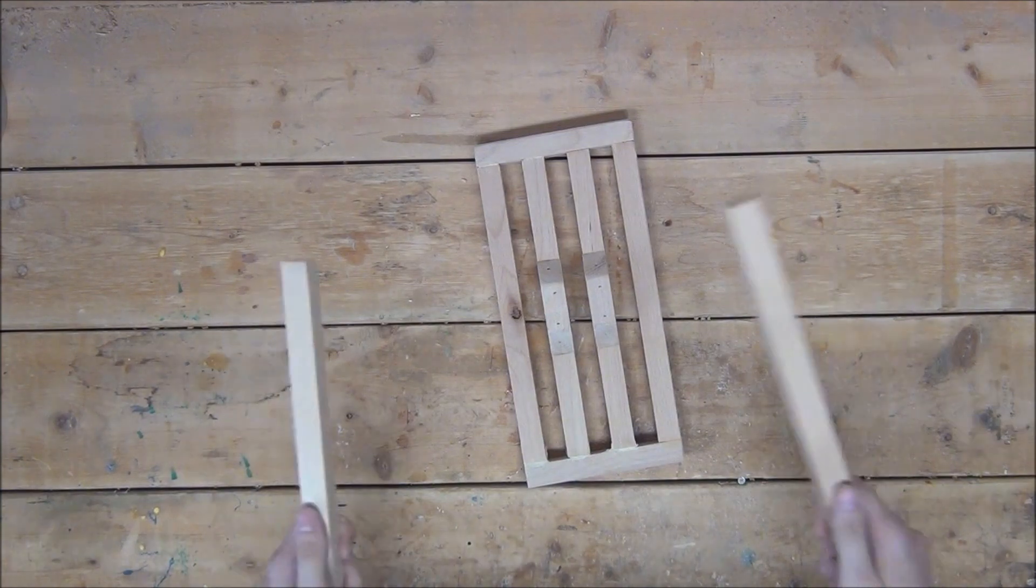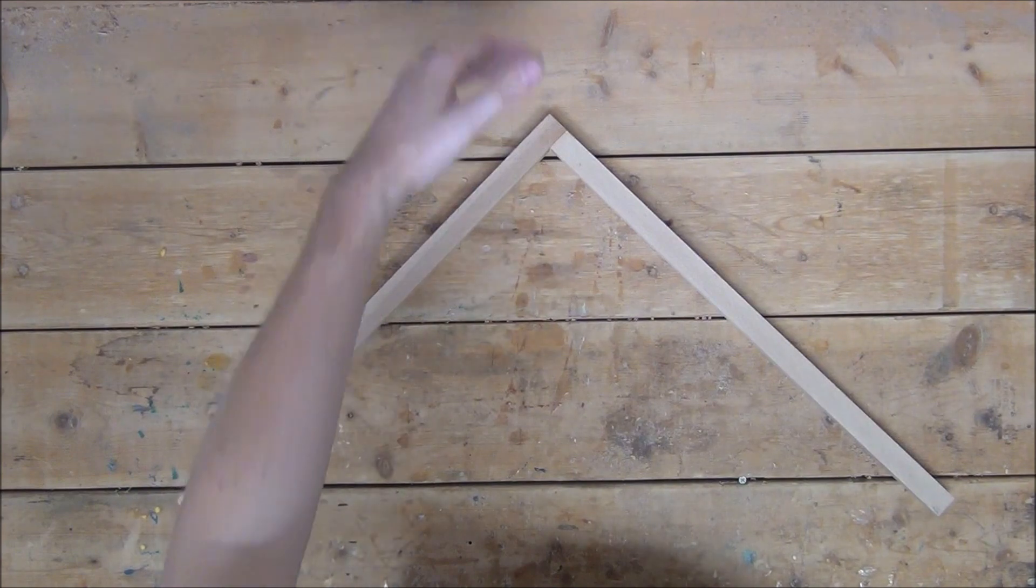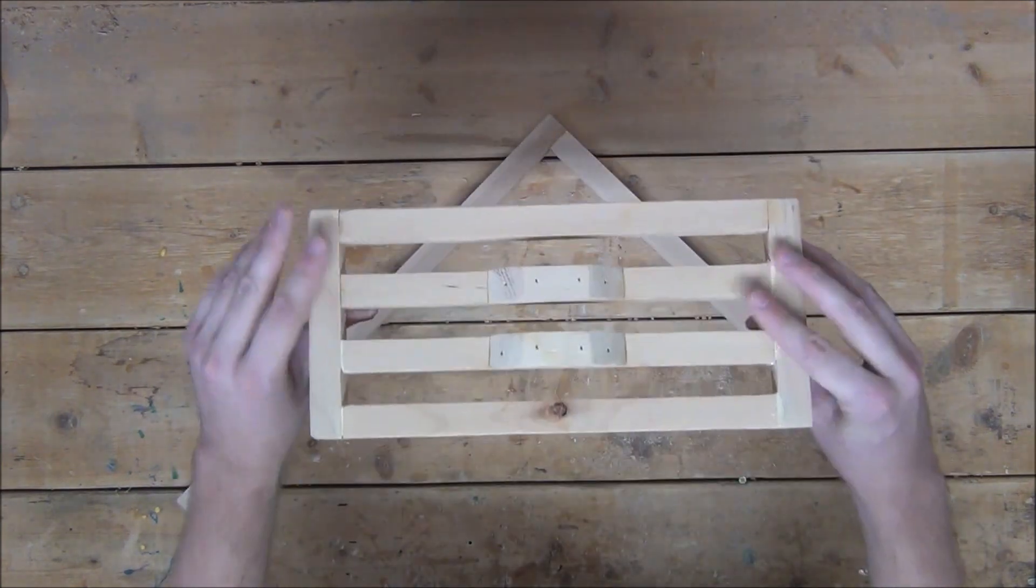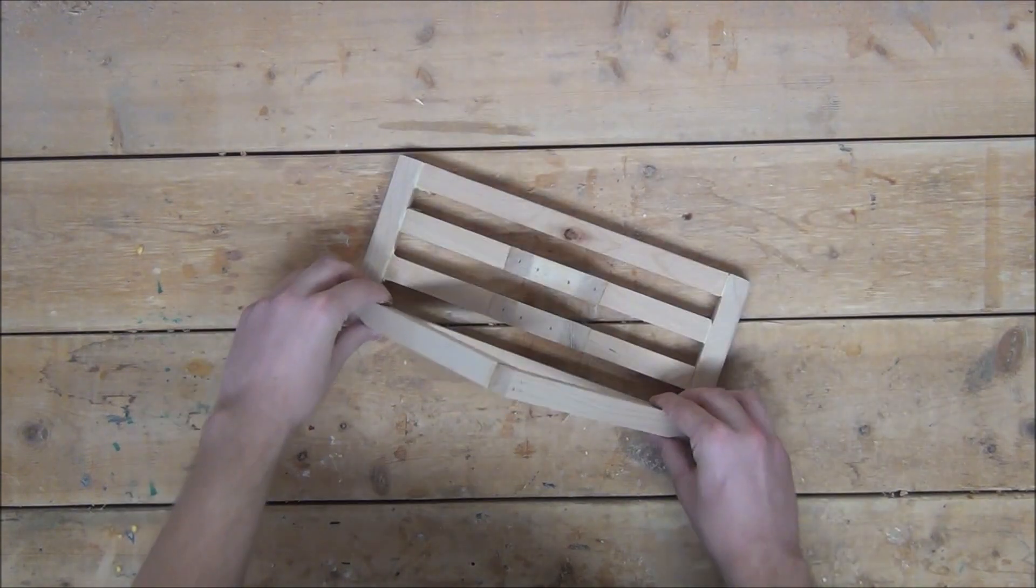Next, we're going to take two more of our 3 quarter inch square pieces and glue and nail them together at a right angle. We'll then measure how far down it comes until it reaches both sides of our platform, cut it at that mark, then glue and nail it onto one of the sides.